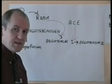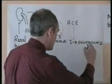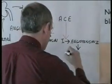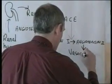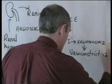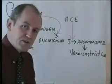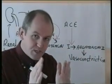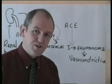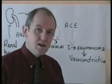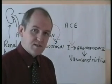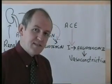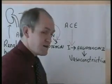What does angiotensin type 2 do? The first thing it does is cause arterial vasoconstriction. If you vasoconstrict the arterioles — if they get smaller — you will increase peripheral resistance, and that will result in increasing blood pressure, because blood pressure equals cardiac output times peripheral resistance. Angiotensin type 2 is a very potent vasoconstrictor and can raise blood pressure quite significantly.